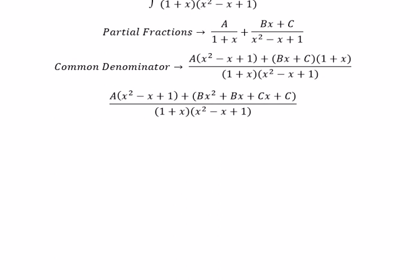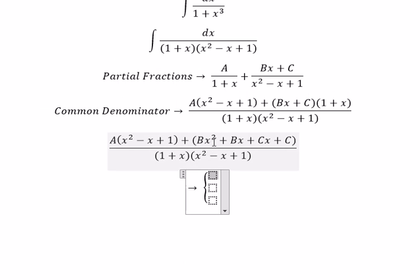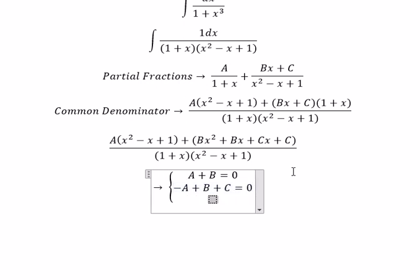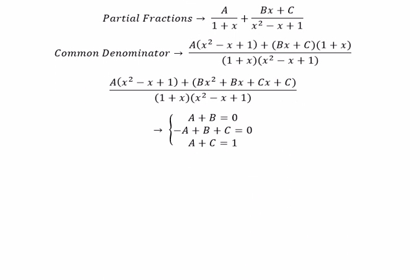Now we create a system of equations. As you can see, for x squared they don't have a coefficient, for x they don't have a coefficient, but A and C have coefficient 1. So we get A plus B equals 0, negative A plus B plus C equals 0, and the last one A plus C equals 1. Solving this system, we get A equals 1 over 3, B equals negative 1 over 3, and C equals 2 over 3.